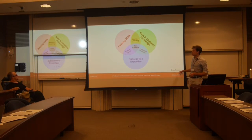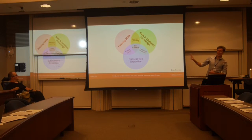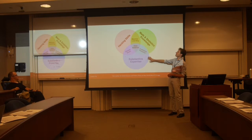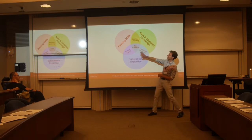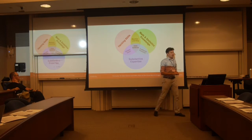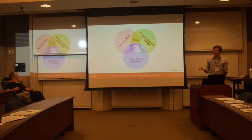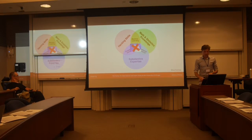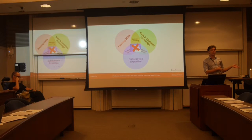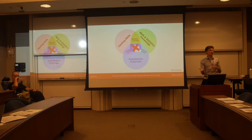Drew Conway came up with a nice Venn diagram: to do data science you need to be a subject-matter expert who's awesome in math and stats and can hack. You're a unicorn — those people are extremely rare. Good data scientists are as rare as unicorns. The response cannot be that we all move to fairytale land — we need teams with complementary skills.